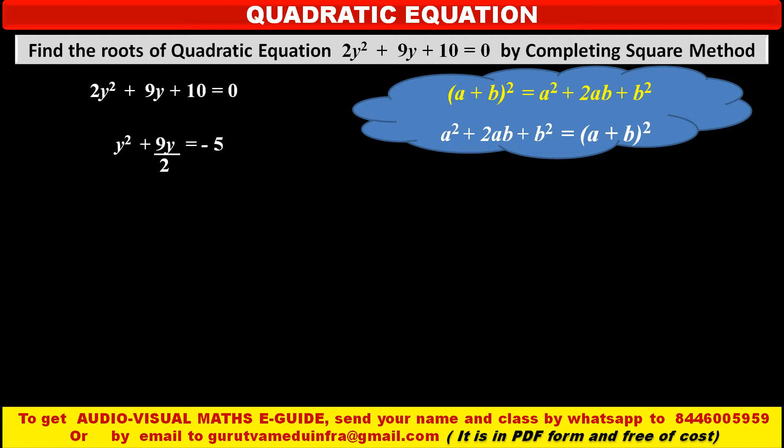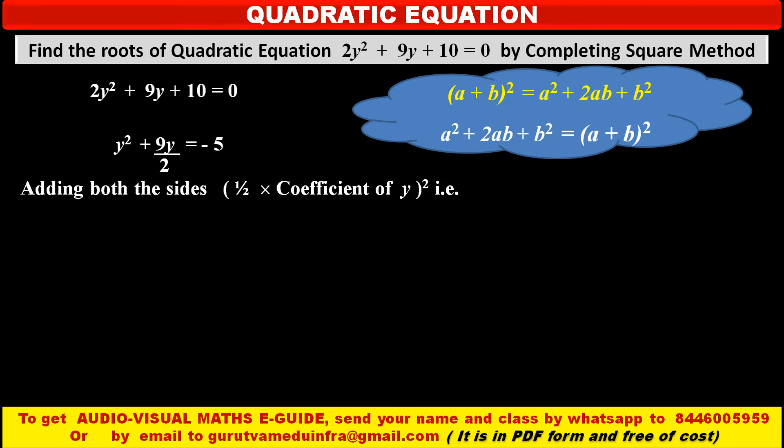But in the left hand side only two terms are there — we want a third term. There is a formula to find this third term: take the square of half of the coefficient of variable y. Here the coefficient of y is 9/2, so we take half of it and then square it, and add this new term to both sides of the equation.